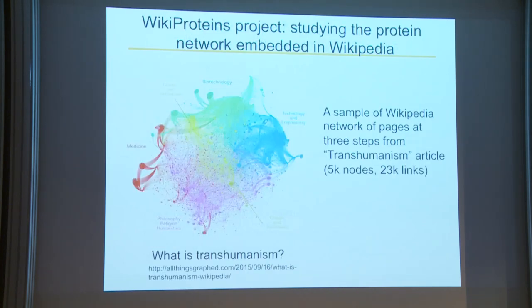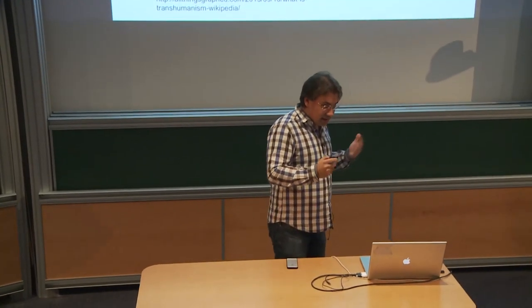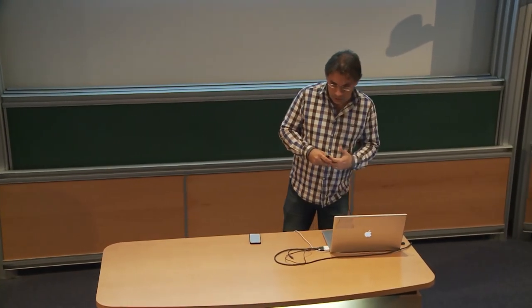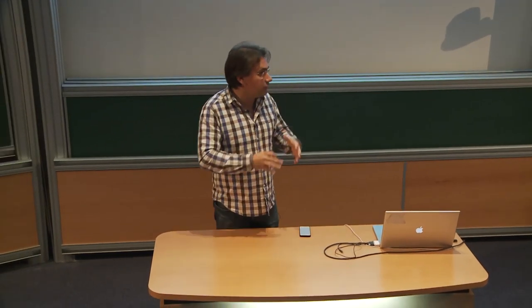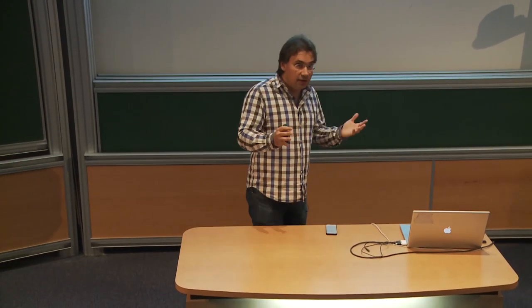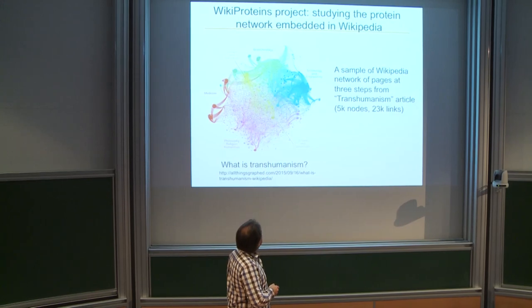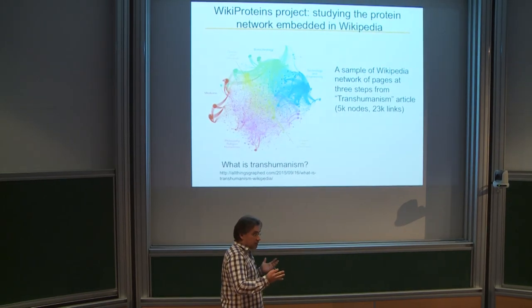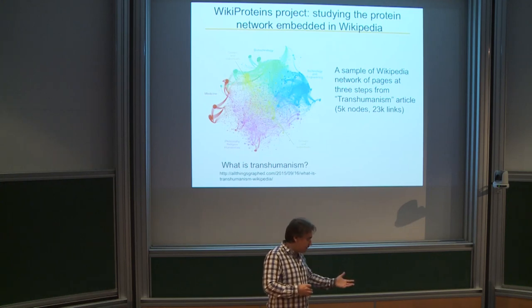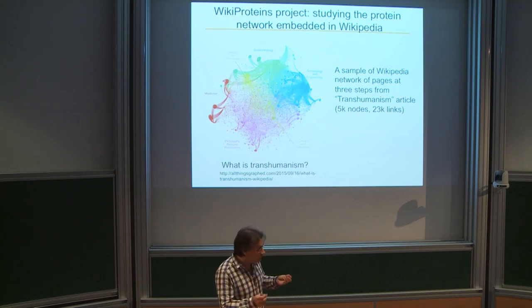Now I switch to the final topic: Wikipedia. We've had many talks about Wikipedia already, and for me it's a very exciting object because it represents human knowledge in graphical form. Of course it's a characteristic and incomplete vision of knowledge, but it's probably the best we have in a formal way. There are many things we can learn from Wikipedia — not just the known facts as content, but the structure of connections between pages can be studied and used to infer knowledge.